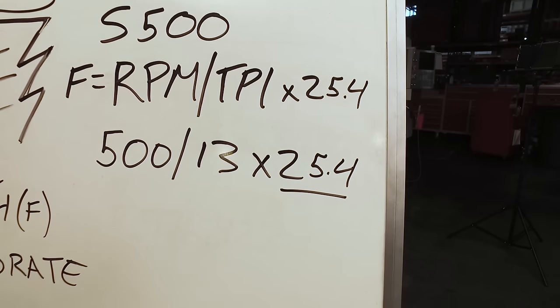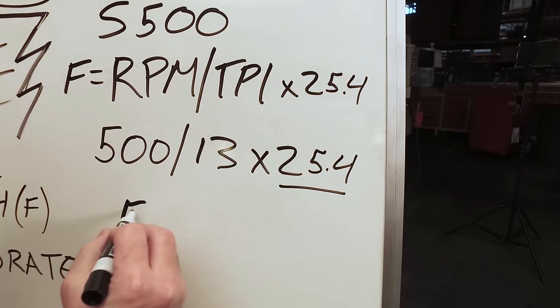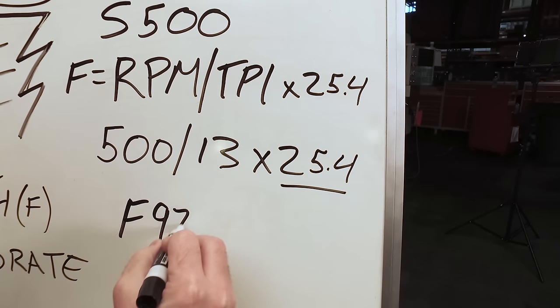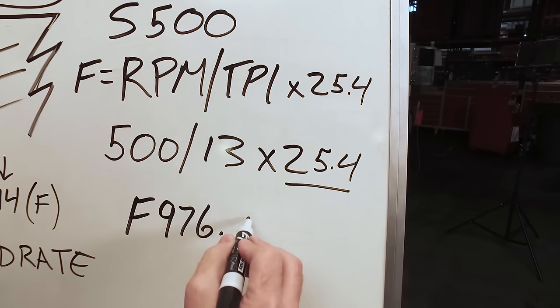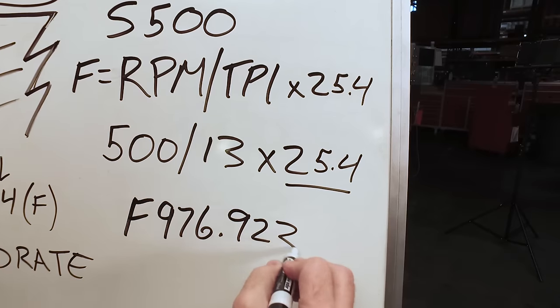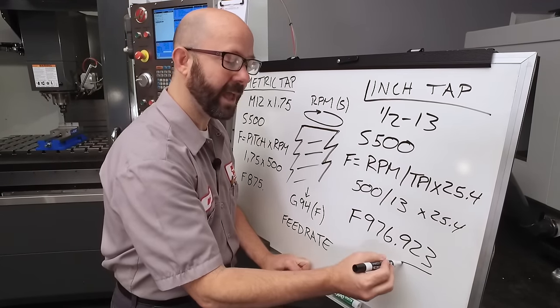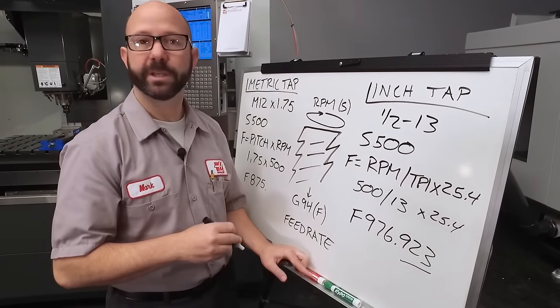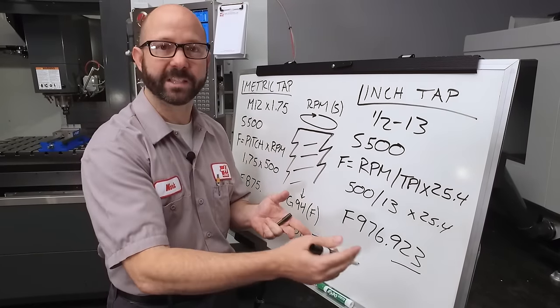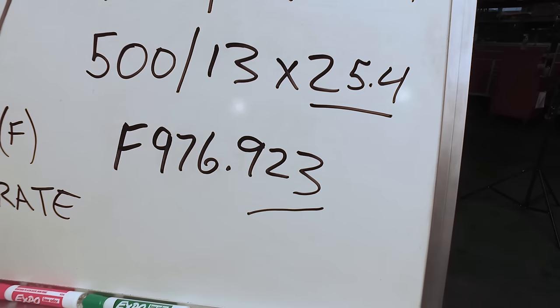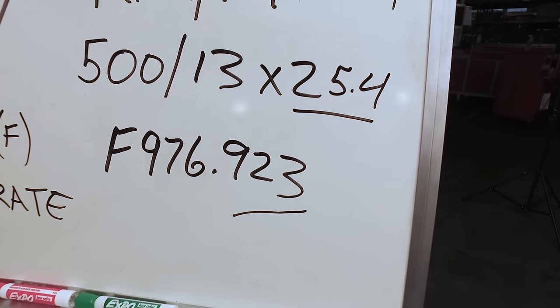Now when we run this through a calculator, we get a millimeter per minute feed rate of 976.923 millimeters. Now this is important. We rounded our number out to three decimal places, because our machine can handle up to three decimal places. The further out we carry that number, the more accurate our threads are.